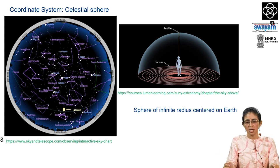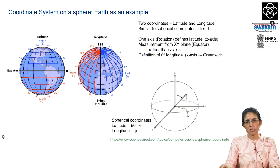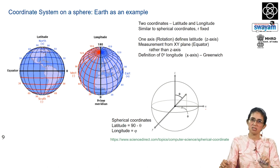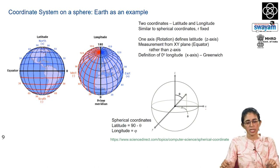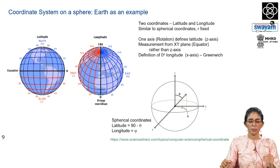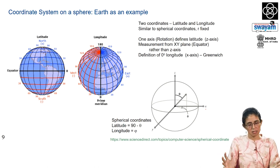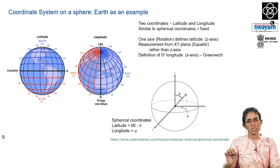To explain this coordinate system, a good reference is coordinates on the Earth's surface. Earth is also a sphere, and to pinpoint a specific location we use two angles: latitude and longitude. If one understands latitude and longitude, the same concept is extended to angles on the celestial sphere. The latitude is defined as an angle measured from the equator. We define the equatorial plane, and the equator is a great circle — a circle that cuts a sphere into two equal halves with the center of the sphere always in the plane of the great circle.